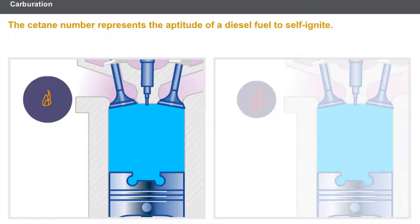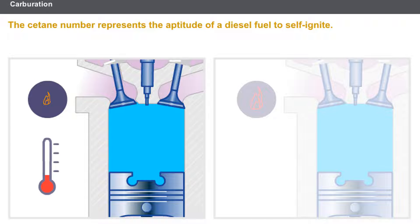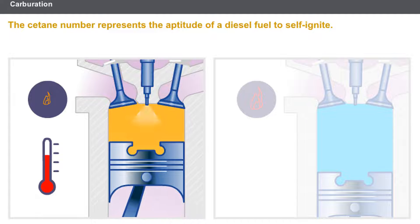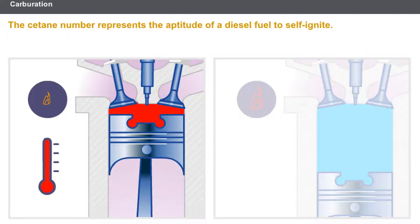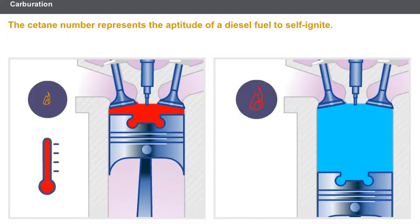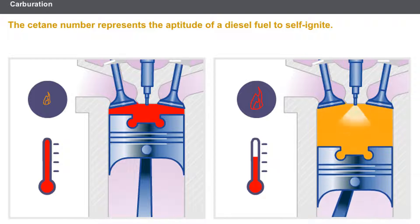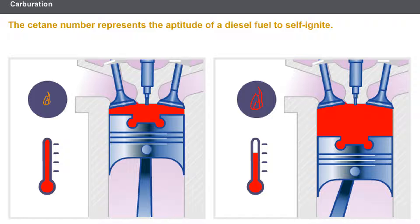The cetane number is a characteristic that represents the fuel grade. This number represents the aptitude of a diesel fuel to self-ignite. The higher the number, the more easily the diesel fuel ignites. The manufacturer's recommendations should be observed.